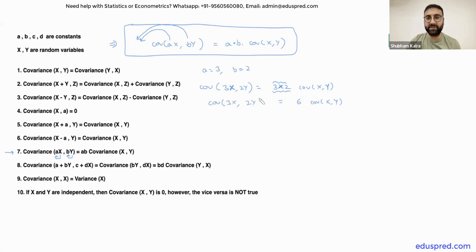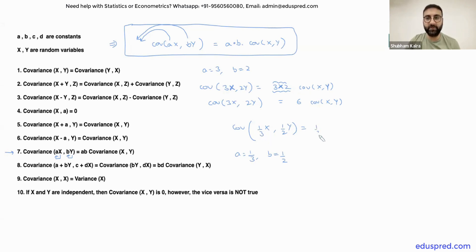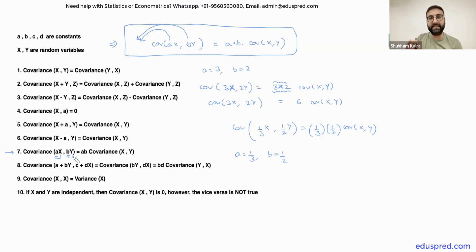Similarly, you can also work with division. For example, the covariance of (1/3)X comma (1/2)Y — in this case A equals 1/3 and B equals 1/2. Dividing by a constant is equivalent to multiplying by its reciprocal. So it will be 1/3 times 1/2 times the covariance between X and Y. Be careful with multiplication and division — if you multiply or divide a random variable by a constant, it will definitely affect your covariance.